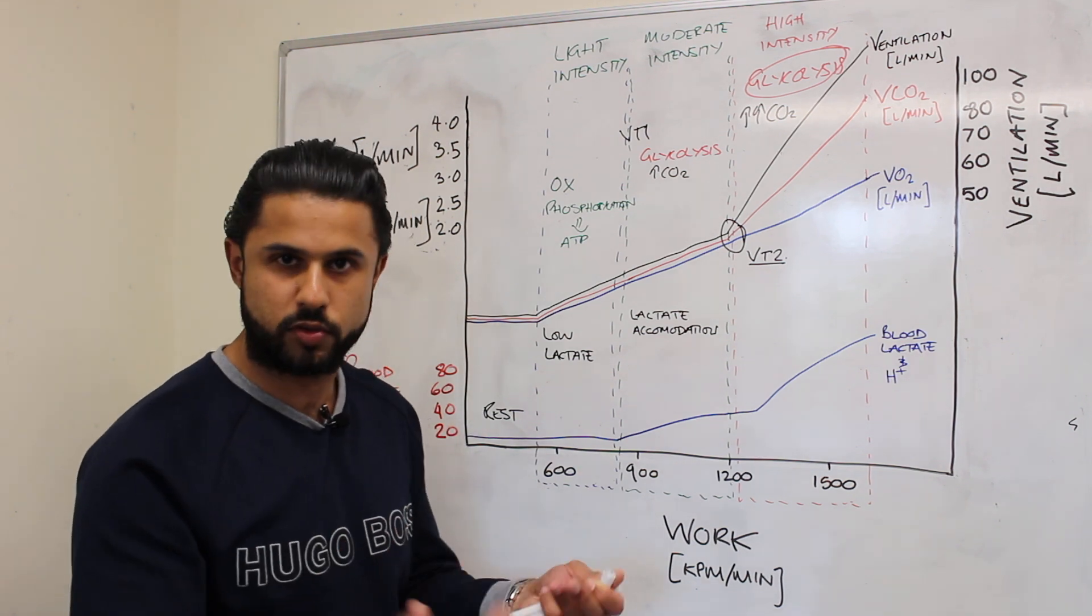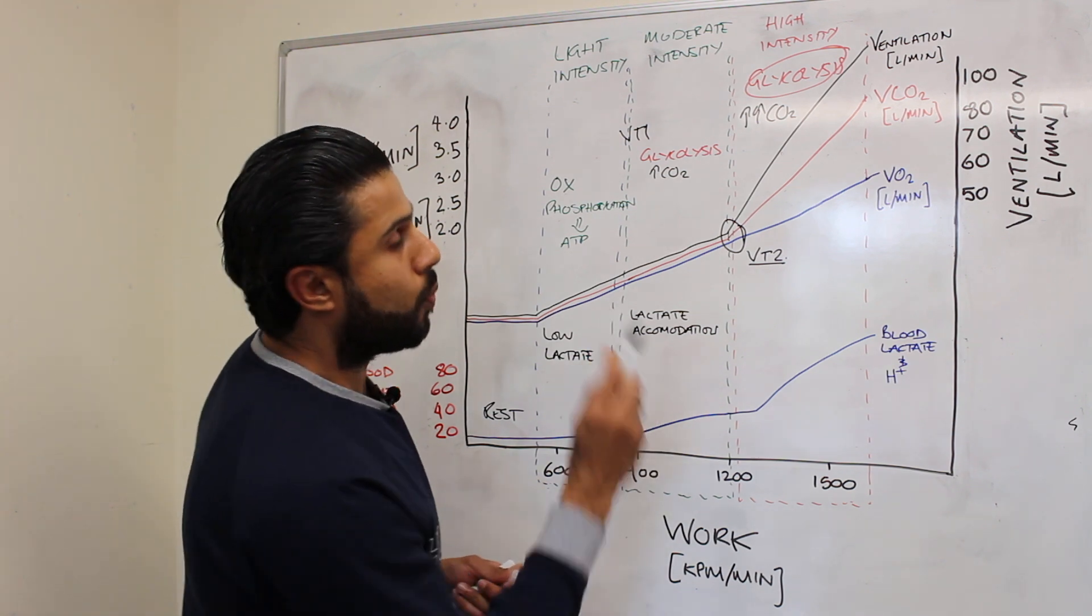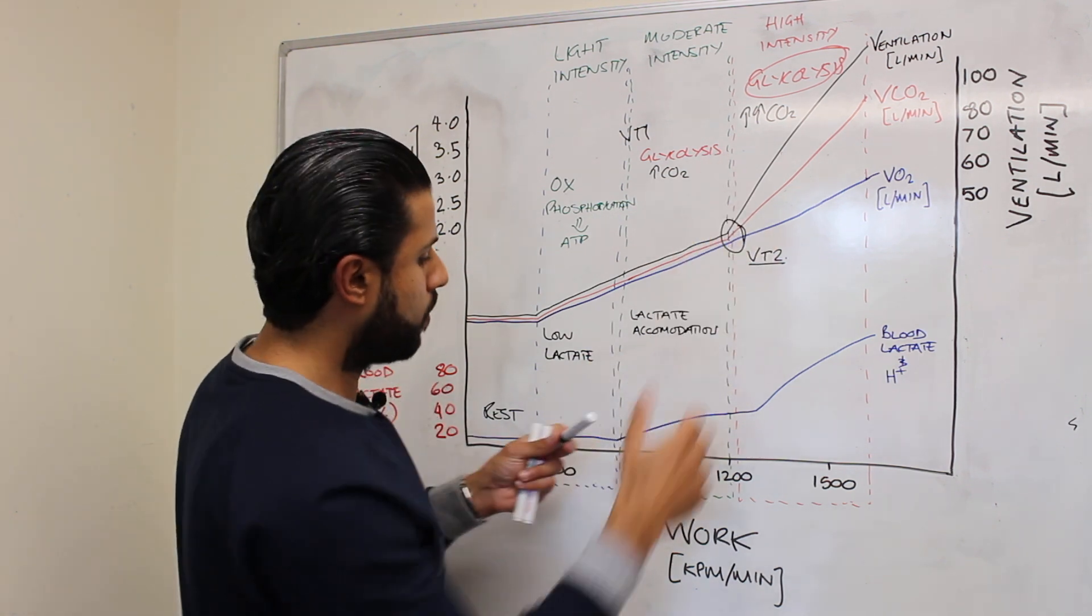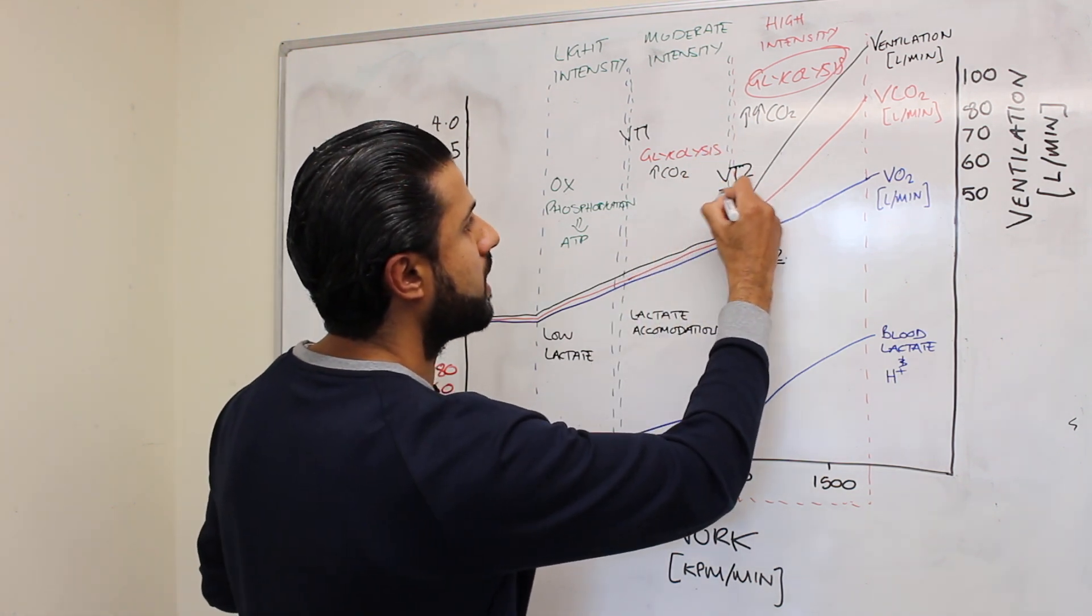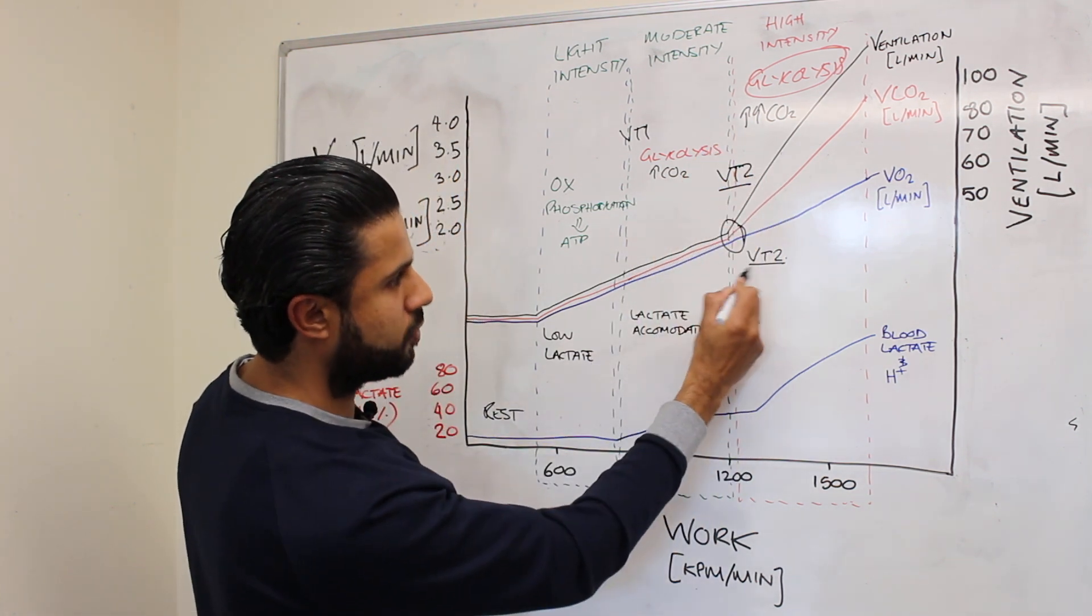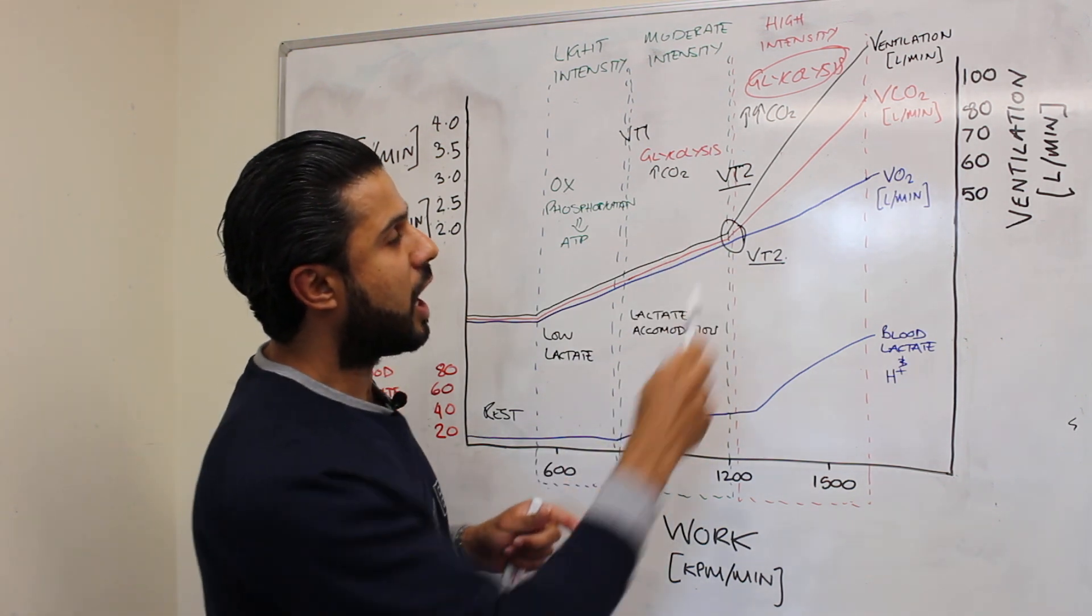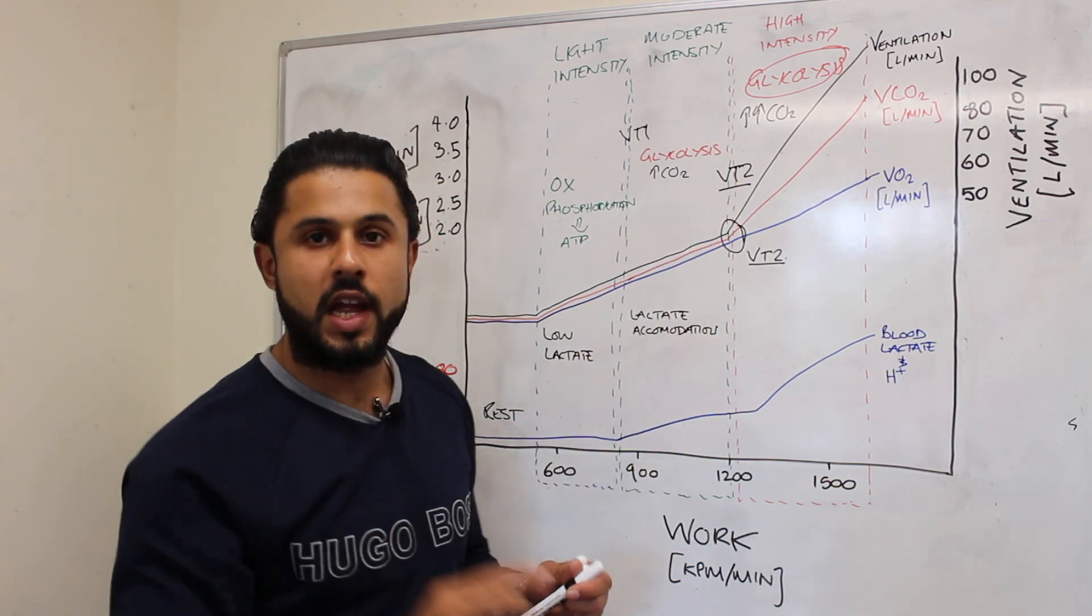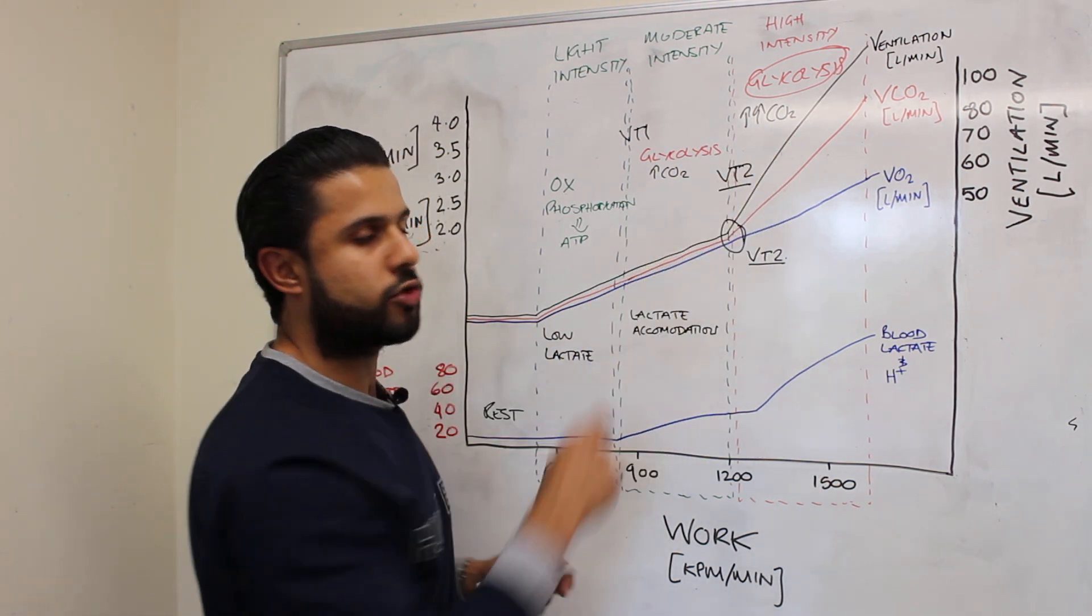Now what's happening with the ventilation is that at this point here which is known as VT2, we're actually seeing a greater production of CO2 because we're relying upon glycolysis. And what happens at the ventilatory threshold is that our ventilation starts to disproportionately rise to the oxygen consumption.